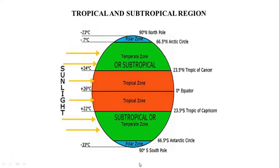First of all, we will try to understand the tropical and subtropical region. In the given diagram, you can see the region which lies between the equator to the Tropic of Cancer in the Northern Hemisphere, and between the equator and the Tropic of Capricorn in the Southern Hemisphere, also known as the tropical zone. Climatically, where the tropical equatorial region ends, the subtropical monsoon region begins.